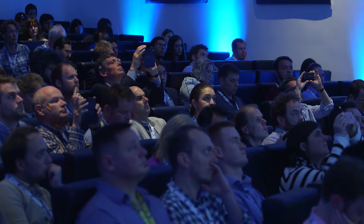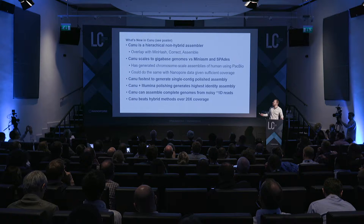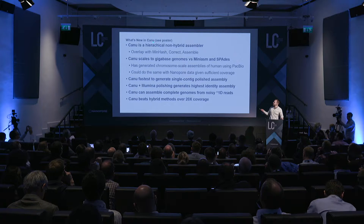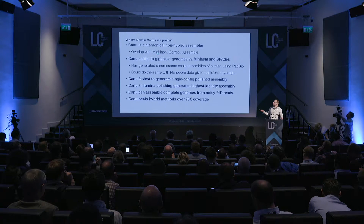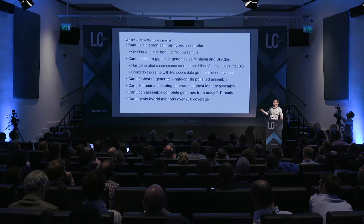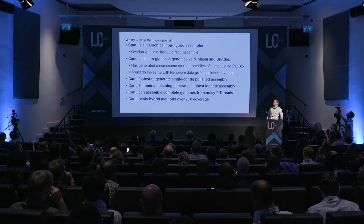Canu is a hierarchical assembler. What does that mean? We basically overlap the raw data, we improve the raw data, then we assemble this improved data. This is actually quite fast — we've optimized this a lot since the first version — and you can actually do this in multiple rounds, which is important for noisy data.